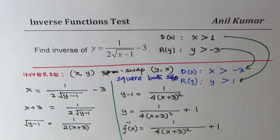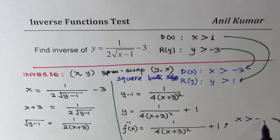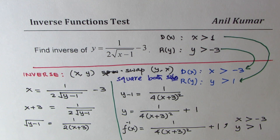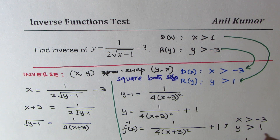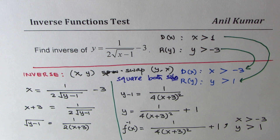Don't forget to write your domain and range: x is greater than minus 3 and y is greater than 1. If you don't write this restriction, your solution is incomplete. I hope these steps are easy to understand — feel free to write your comments, share your views, and any suggestions are most welcome. Thank you and all the best.